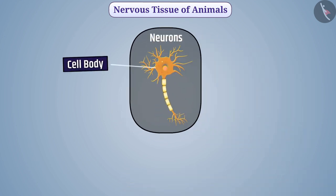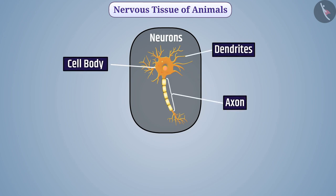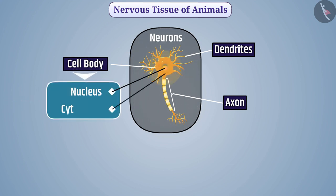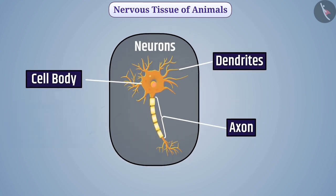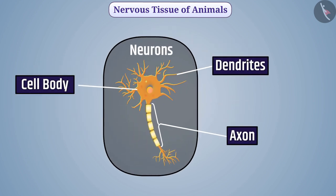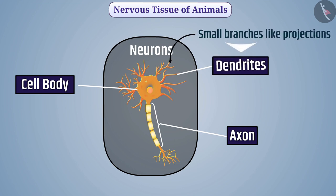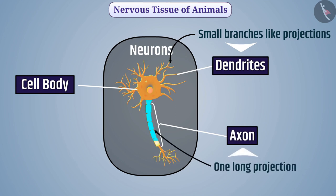A neuron is made up of a cell body, dendrites, and an axon. The cell body is star-shaped and is the main part of the neuron, which contains the nucleus and cytoplasm. From the cell body, small branch-like projections called dendrites arise, and one long projection called the axon also arises.